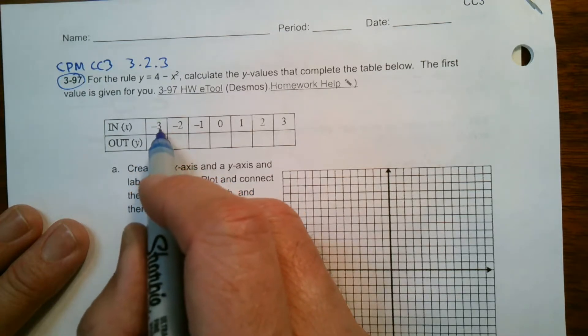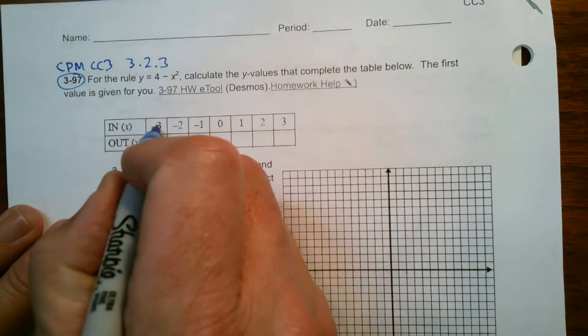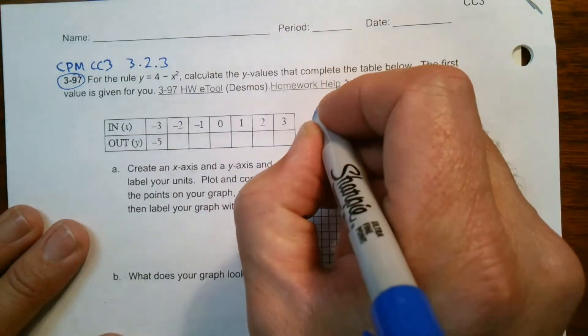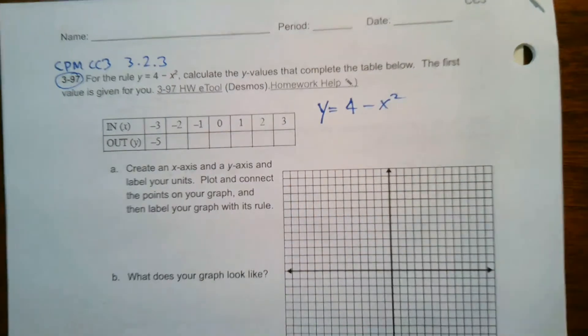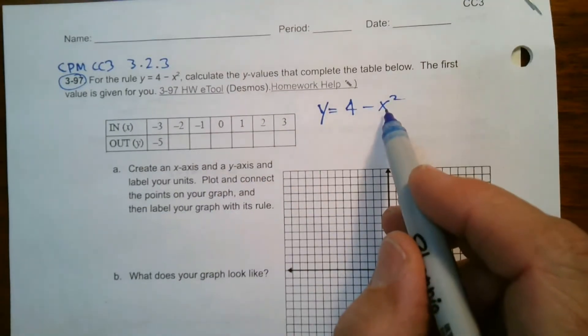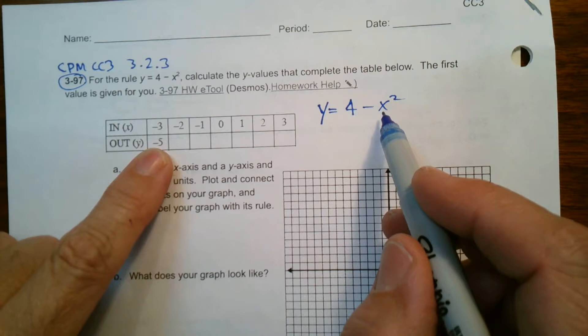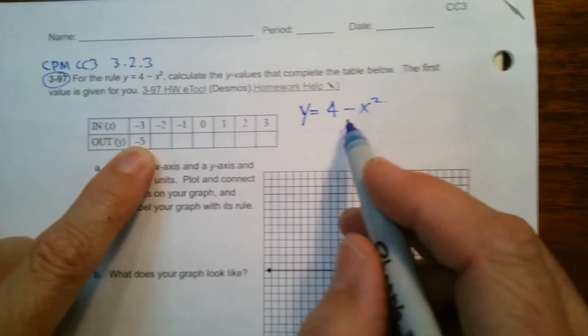So let's just check that math. If I, what they said is if I put a negative three into that equation and I'm going to rewrite that equation here, Y is equal to four minus X squared. So if I put a negative three into that, I should get a negative five. That should make sense.